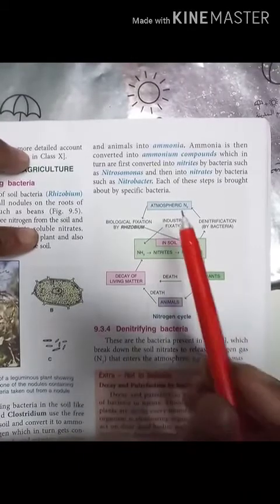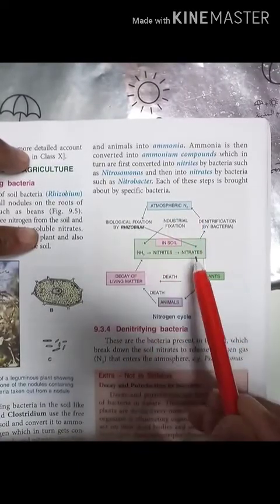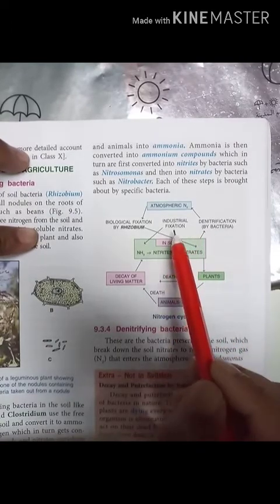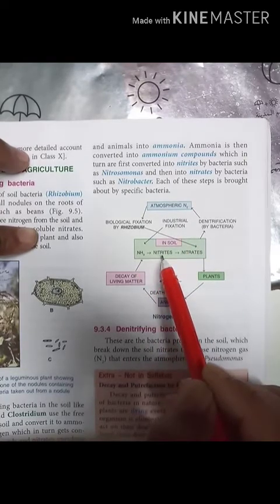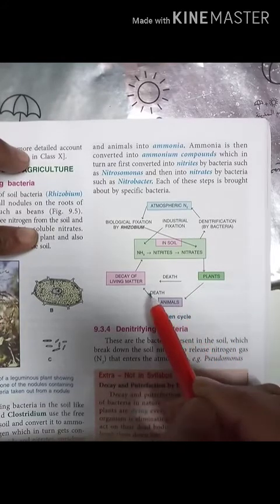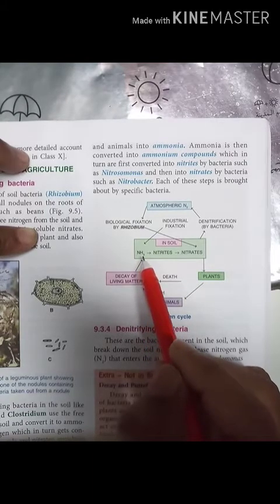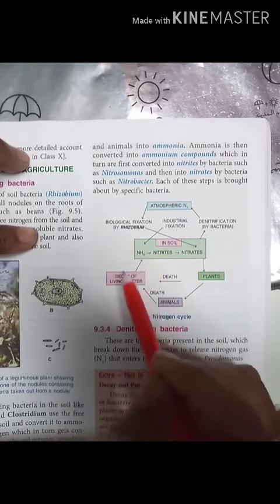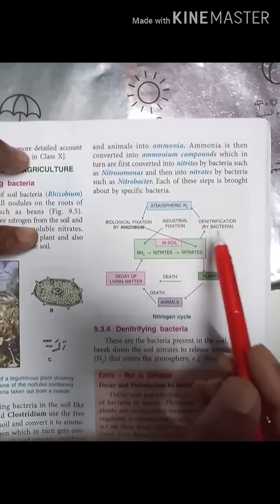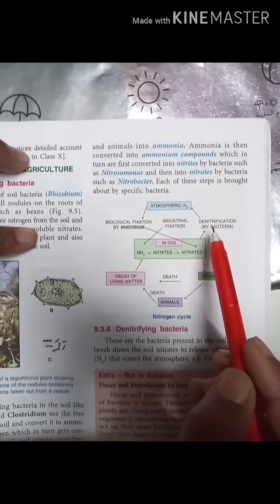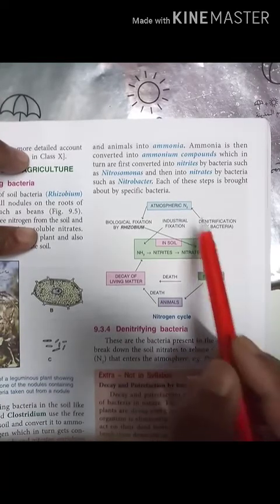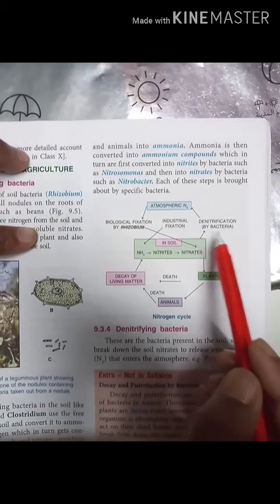Atmospheric nitrogen cannot be used directly by plants. By industrial fixation it is converted to ammonia, then nitrites, then nitrates, which plants and animals use. When they die, it converts again into ammonia — this is nitrification. Some of the nitrates are again converted into atmospheric nitrogen by certain bacteria, and this process is called denitrification — the conversion of nitrates into nitrogen gas.